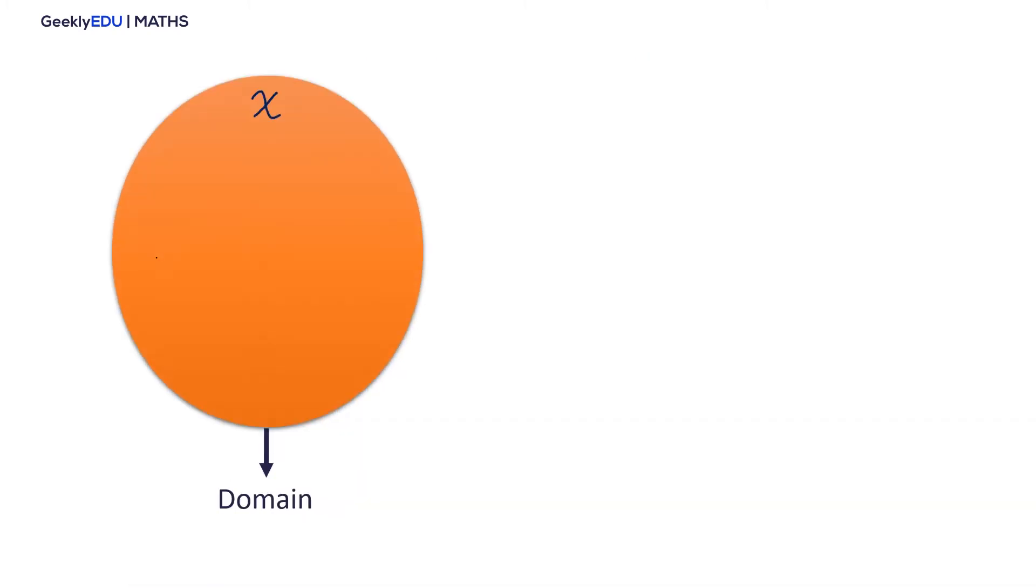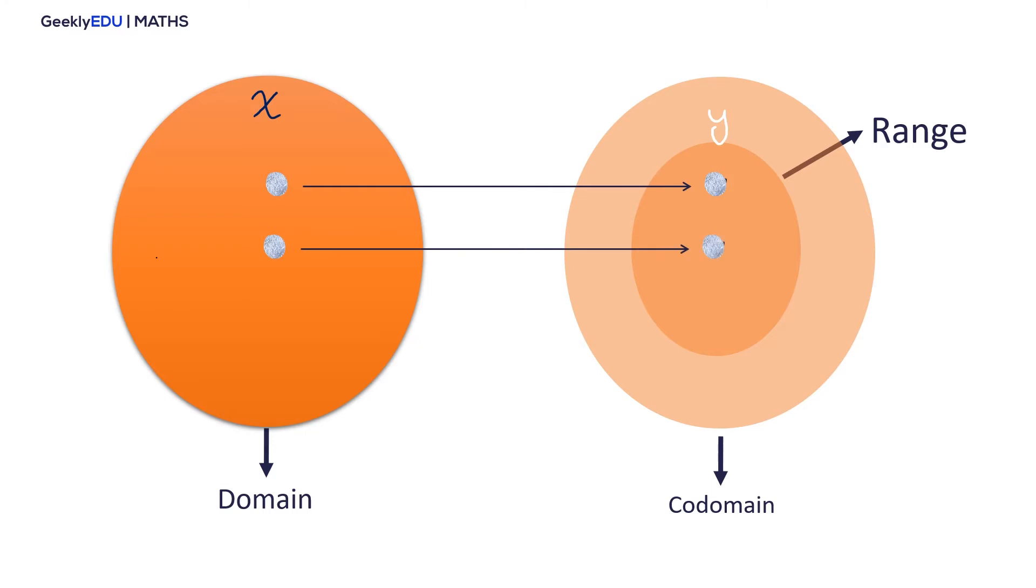The x set is called a domain, and the set y is a codomain. There is another set of elements that get pointed to in y. The actual values produced by the function are the range. The range is a subset of the codomain. The codomain is the set of values that could possibly come out. The codomain is actually part of the definition of a function, and the range is the set of values that actually do come out.